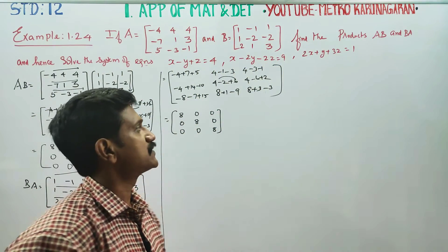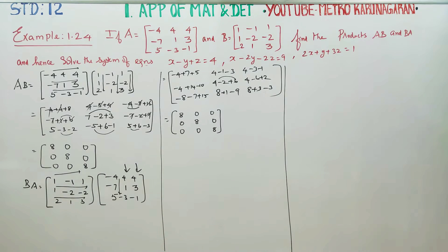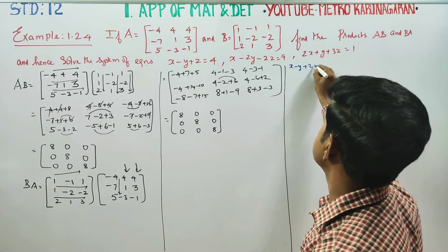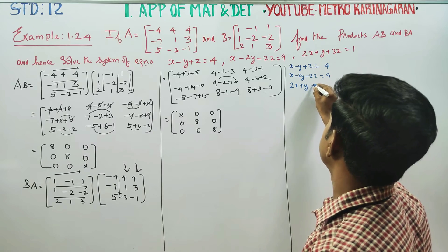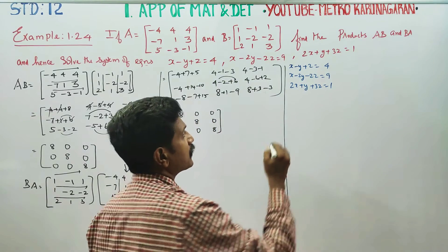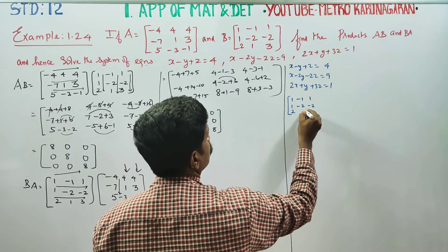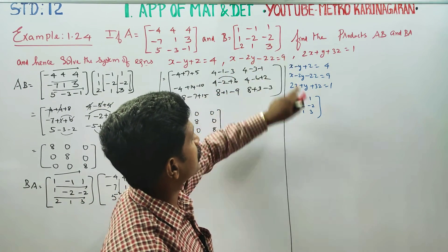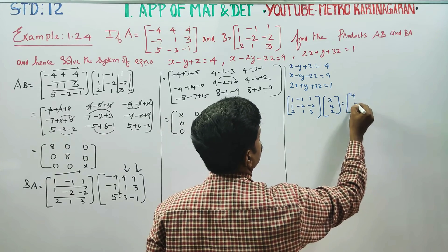Solve the system of equations. We will enter into a new sum. I am going to solve this equation — 3 equations. Now solve the first linear equation in matrix style: x minus y plus z is equal to 4, x minus 2y minus 2z is equal to 9, 2x plus y plus 3z is equal to 1. The matrix form is: 1 minus 1, 1; 1 minus 2, minus 2; 2, 1, 3; into x, y, z is equal to 4, 9, 1.